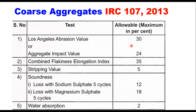The abrasion value should be maximum of 30% and impact value 24%. In MORTH specification of 2013, the abrasion value is 40% and impact value is 30%, whereas in IRC 107 these are 30 and 24. Combined flakiness elongation index should be maximum of 35. Stripping value 5% maximum. Soundness test should be conducted. Loss with sodium sulphate after 5 cycles is 12% and with magnesium sulphate it is 18%. Water absorption should not be more than 2%.